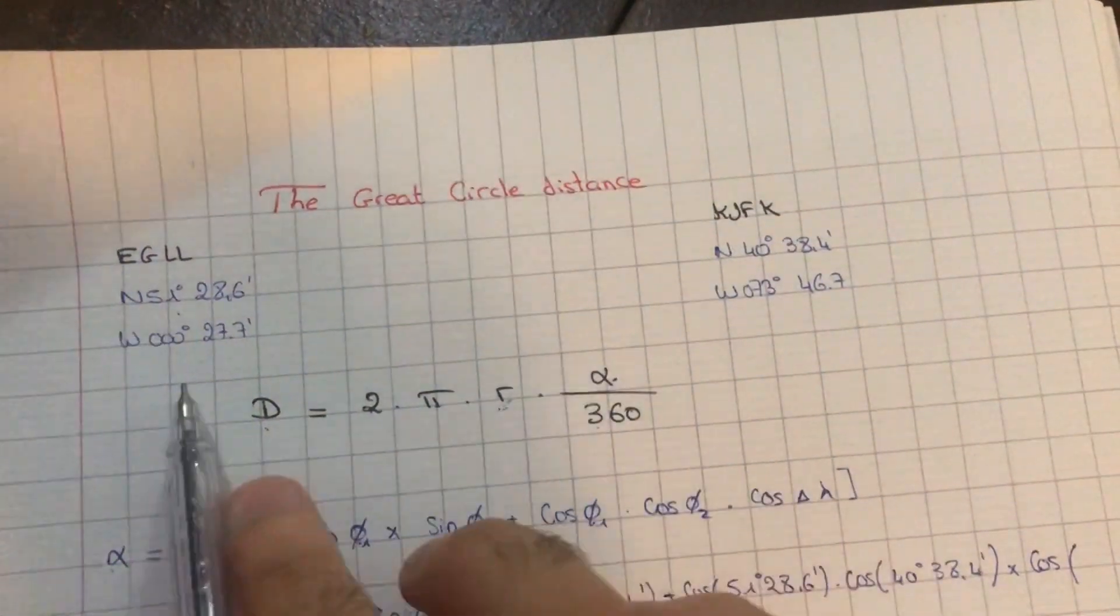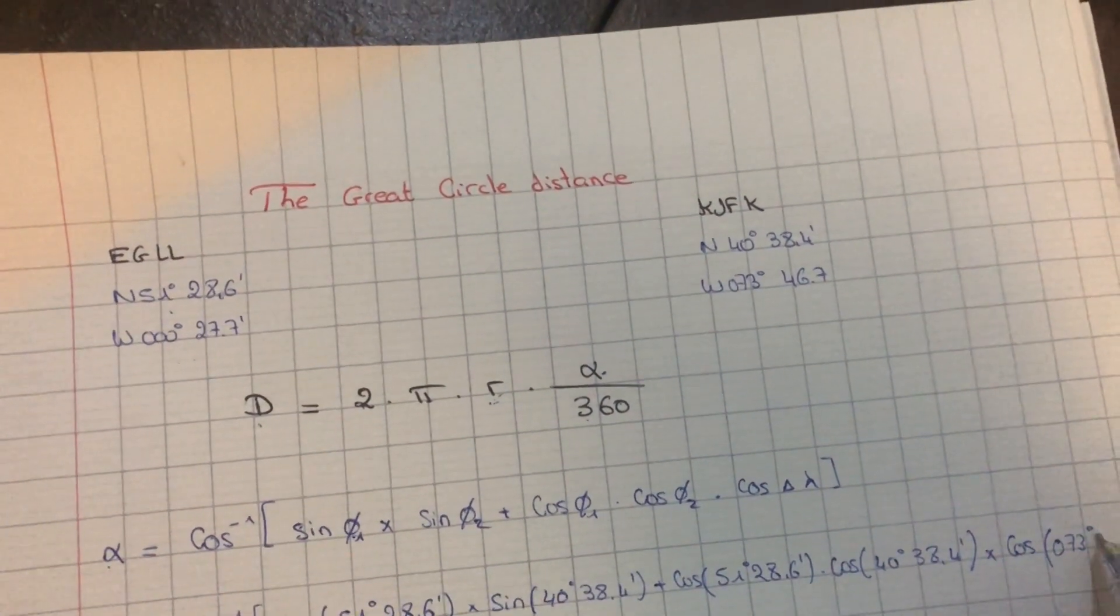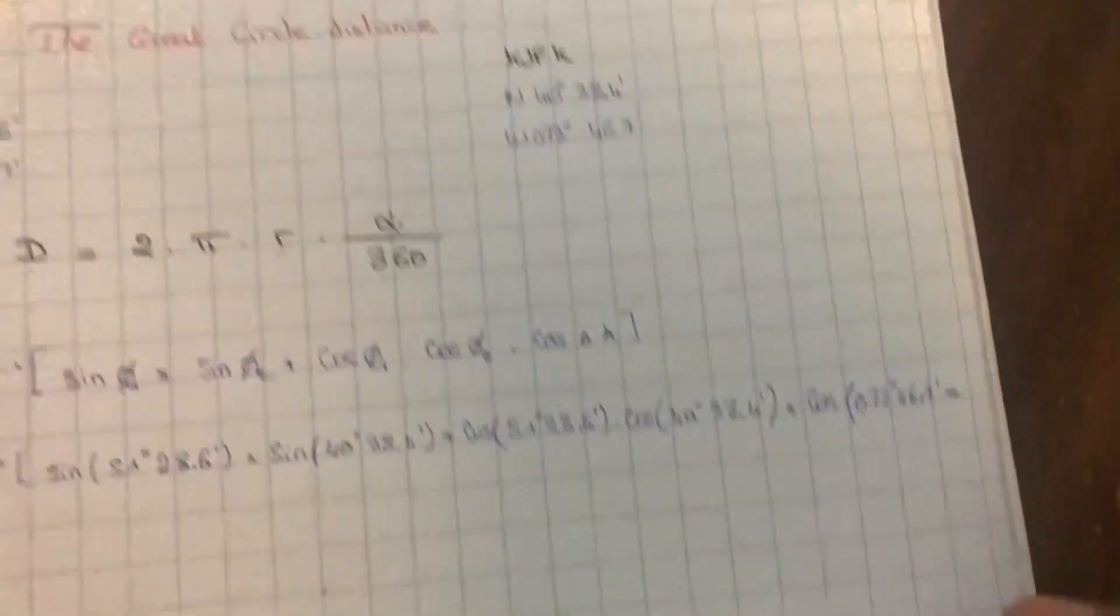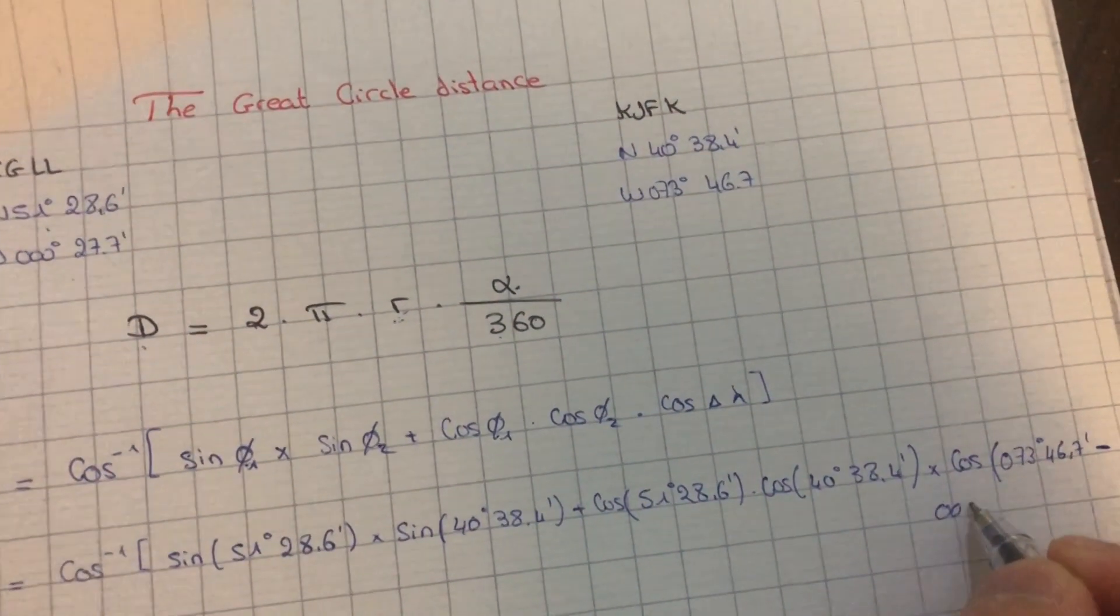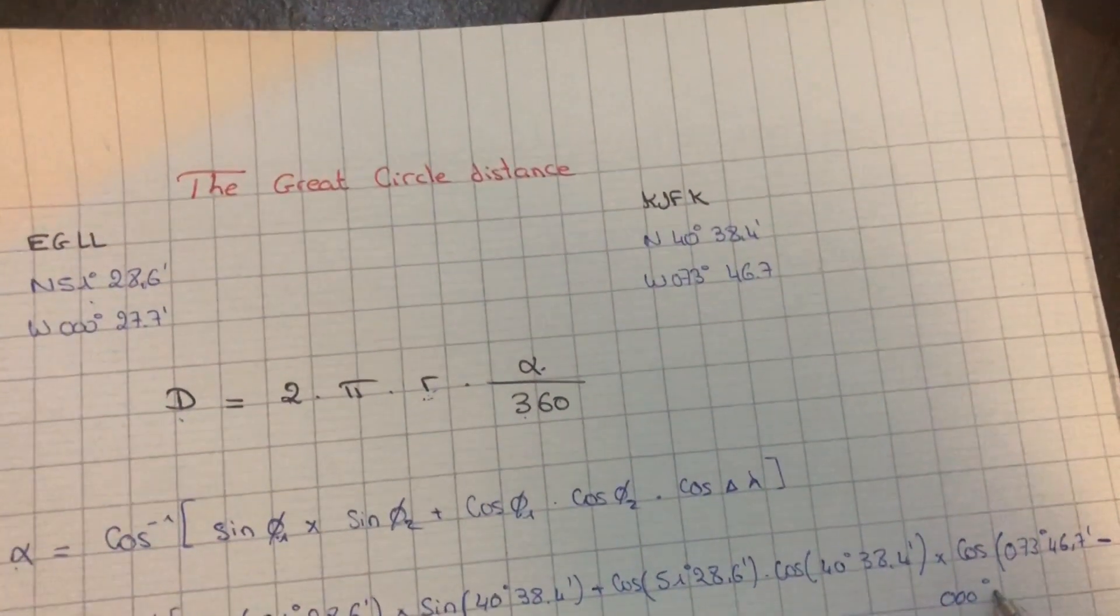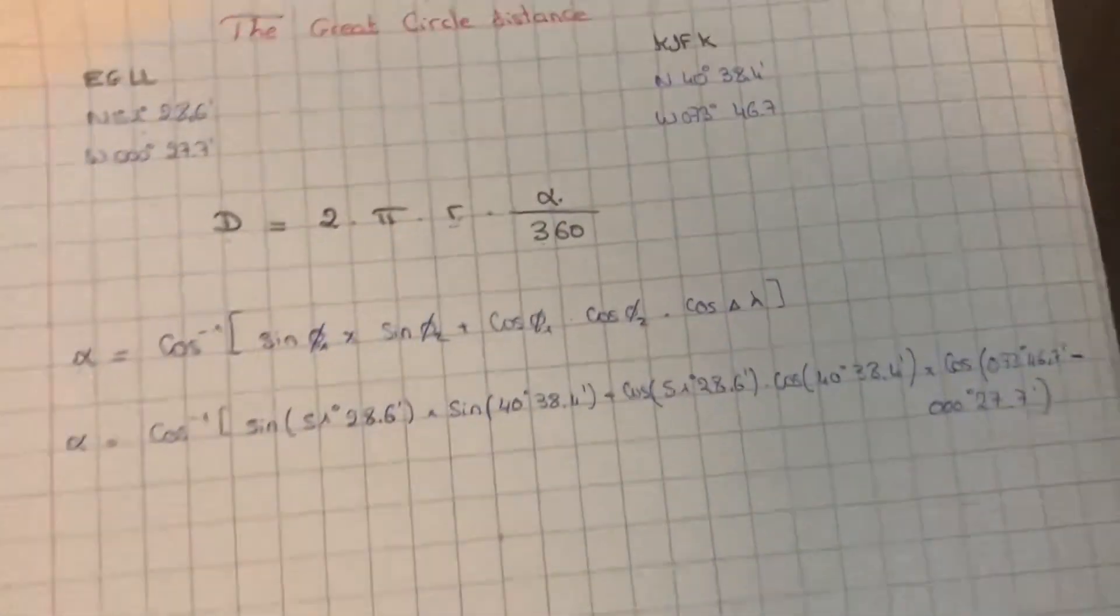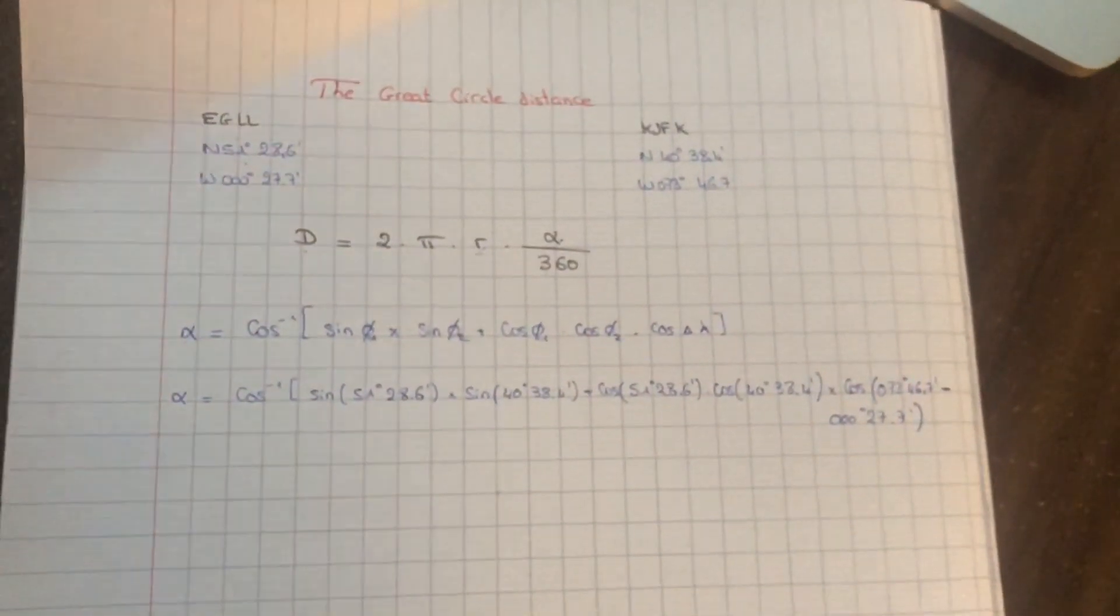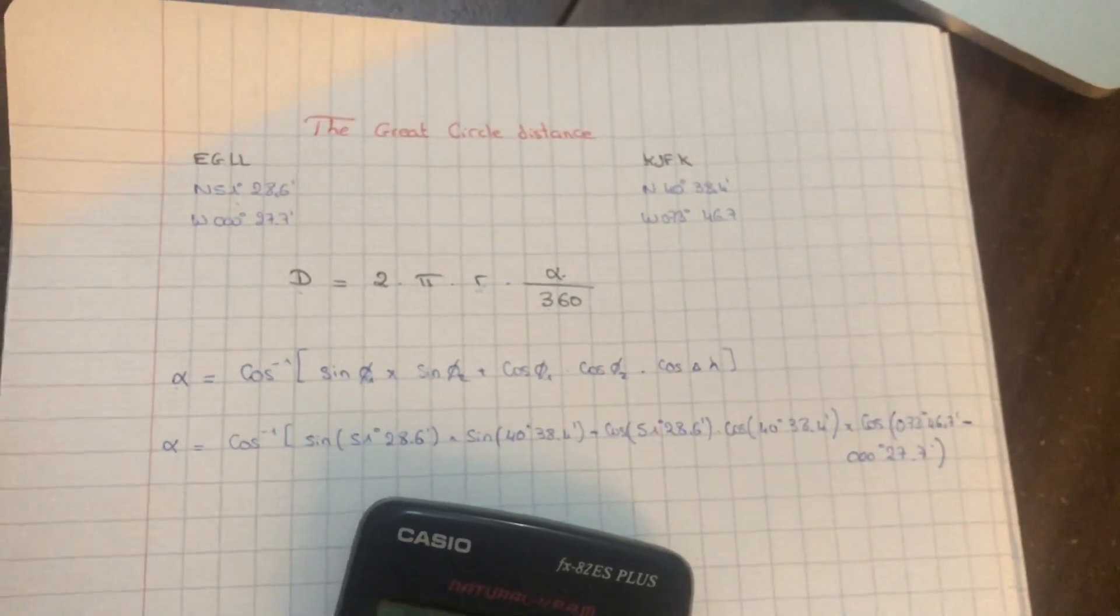It doesn't matter which one goes first, so let's say 073 degrees 46.7 minutes minus the second one, 000 degrees 27.7 minutes. So if we put in this long-ass formula in the calculator, it goes like this.